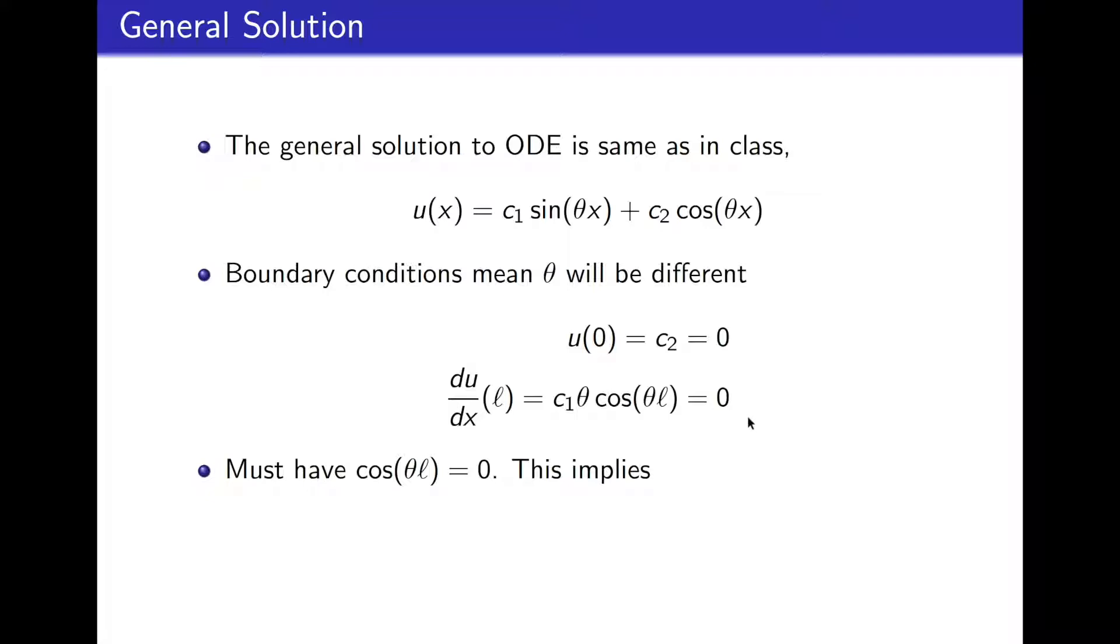Since both c1 and theta we know are not equal to 0, we must have that the cosine factor is equal to 0. And this implies that theta times L, the argument to cosine, has to equal some odd integer times pi divided by 2,